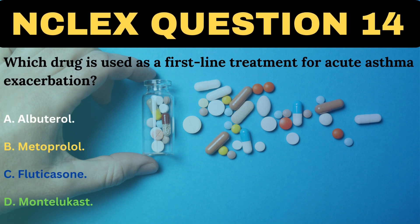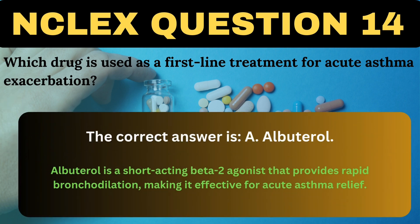Which drug is used as a first-line treatment for acute asthma exacerbation? A. Albuterol. B. Metoprolol. C. Fluticasone. D. Montelukast. The correct answer is A, Albuterol. Albuterol is a short-acting beta-2 agonist that provides rapid bronchodilation, making it effective for acute asthma relief.